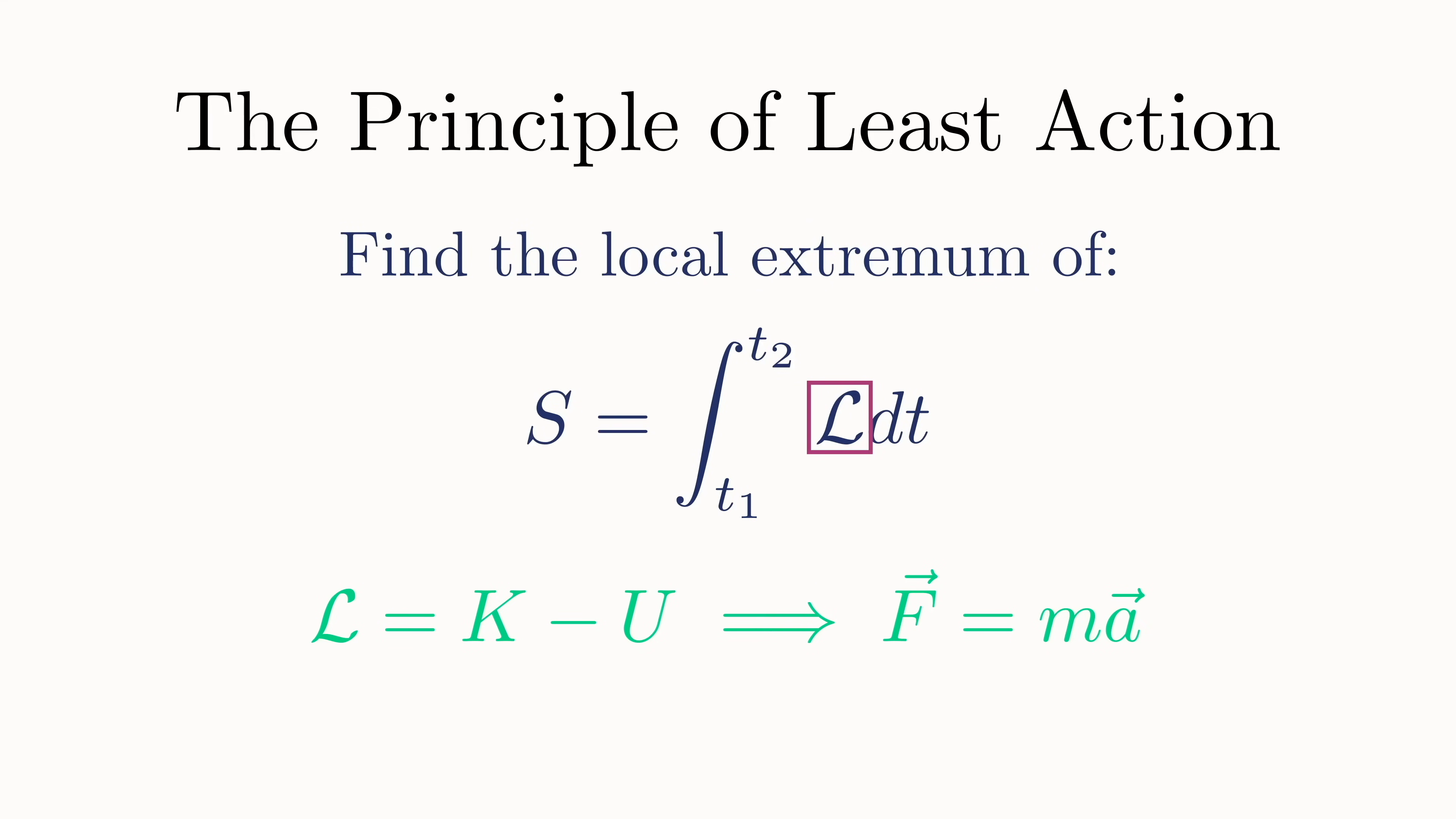In fact, for Lagrange's approach, the principle of least action is the really fundamental thing here. For different physical systems, we plug in a different Lagrangian to arrive at different equations of motion. But for classical systems, the Lagrangian that leads to the same equations of motion as Newton's is the one where L equals K minus U. This is why the classical Lagrangian frequently seems to just appear out of nowhere in textbooks.